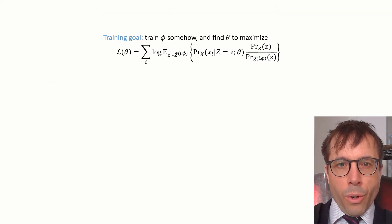OK, so this is what our new goal is. We want to somehow learn a good φ, and at the same time, we want to find θ to maximize the log likelihood of the dataset.